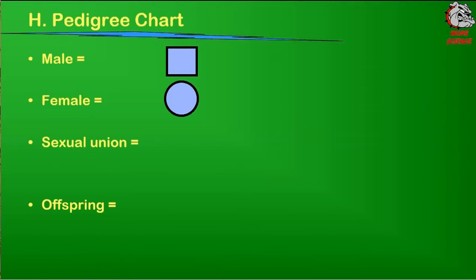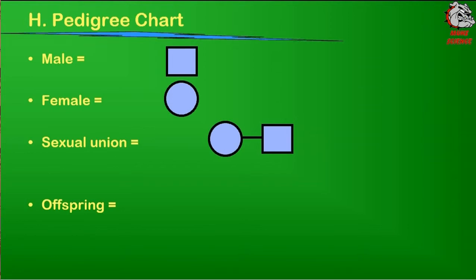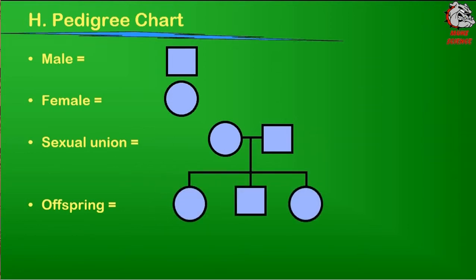The way pedigree charts work is that we have a way to show familial relationships with individuals. Males are usually signified with a box and females with a circle. A sexual union between a male and a female is represented by a horizontal line, and offspring from those are shown as a line down from that horizontal line with a connector to each of the individual offsprings.